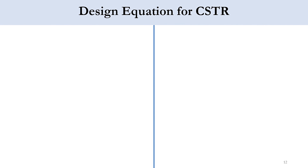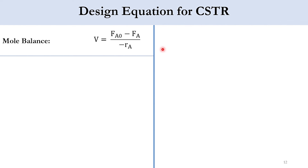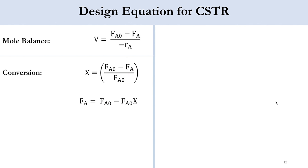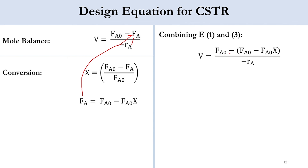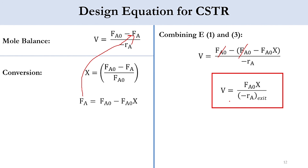For the CSTR, the mole balance is V = (FA0 − FA) / (−rA). Since it is a continuous reactor, conversion is X = (FA0 − FA)/FA0, so FA = FA0 − FA0·X. Substituting FA into the mole balance: V = (FA0 − (FA0 − FA0·X)) / (−rA), the FA0 terms cancel, giving V = FA0·X / (−rA), evaluated at exit conditions. We note here that −rA is taken at exit — the reason for which I leave as a question for you.